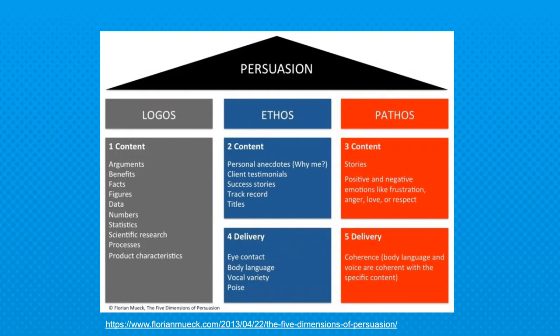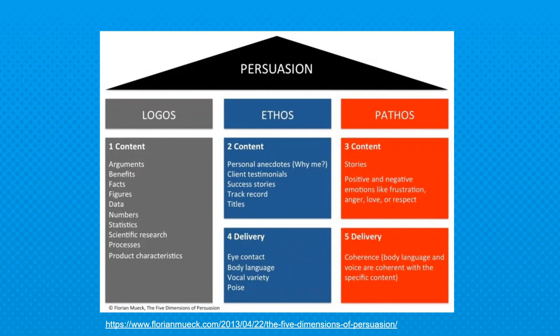You need to have coherence — your body language must match the tone of the topic you're talking about, because if you're happy about all these sad puppies, people get really thrown off. Through content: ethos comes from personal anecdotes, testimonials, track records, and stories. And then pathos from sad stories and cultivating positive and/or negative emotions — you can do both.